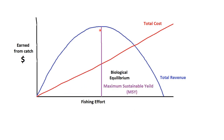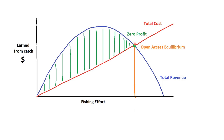From the biological point of view, we think about where we reach the highest growth rate. The highest growth rate gives the highest population available in the system, and that point is called Maximum Sustainable Yield — the biologist's point of view. When the total cost line and total revenue line meet at the same point, meaning zero profit, that is called Open Access Equilibrium.